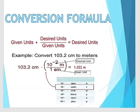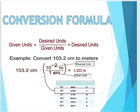if we want to convert 103.2 cm to metres, after applying formula, we get answer 1.032 metres.